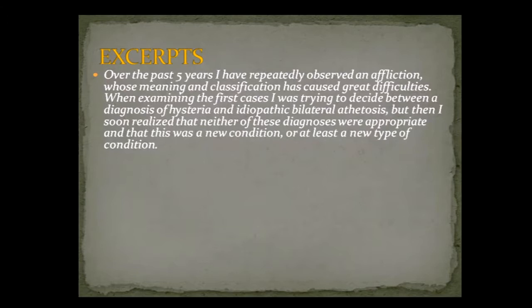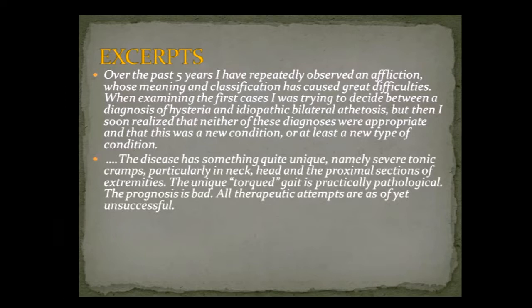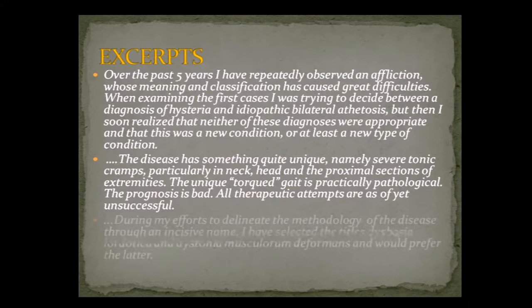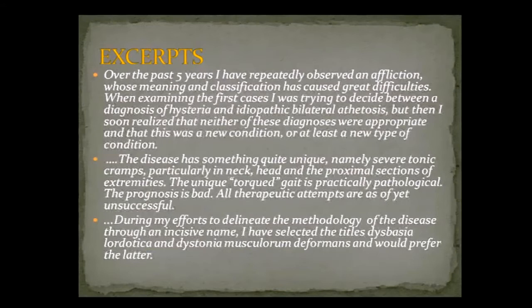Oppenheim describes these movements: 'Over the past five years, I have repeatedly observed an affliction whose meaning and classification has caused greater difficulties. When examining the first cases, I was trying to decide between the diagnosis of hysteria and idiopathic bilateral athetosis. But I soon realized that neither of these diagnoses were appropriate and that this was a new condition. The disease has something quite unique, namely severe tonic cramps, particularly in neck, head, and the proximal sections of extremities. The prognosis is bad. All therapeutic attempts are as of yet unsuccessful.'